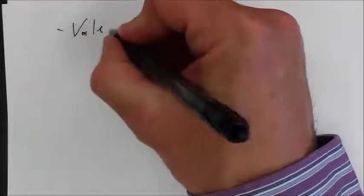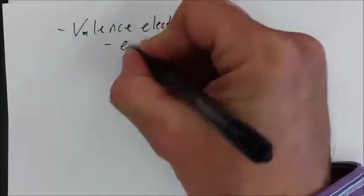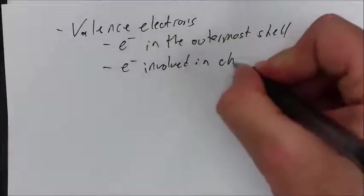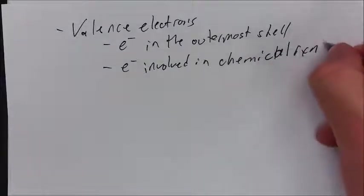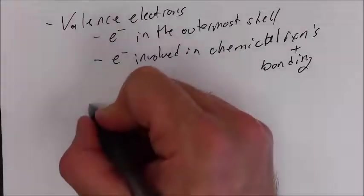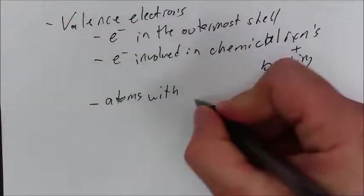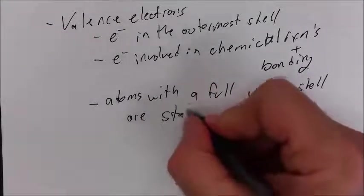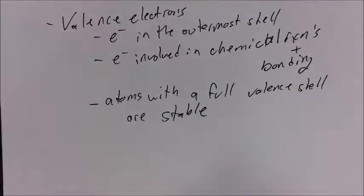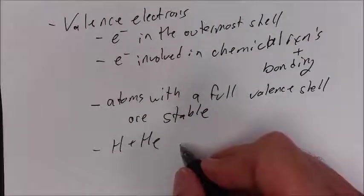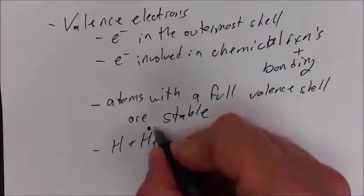Valence electrons are the electrons in the outermost shell. These are the electrons involved in chemical reactions and bonding. Atoms with a full valence shell are stable. So hydrogen and helium, since there's only one shell, they're seeking two valence electrons.